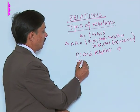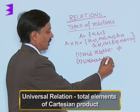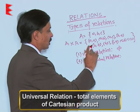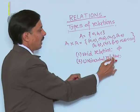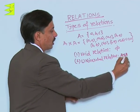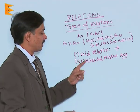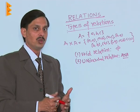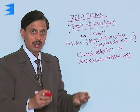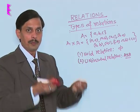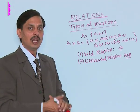Another is the universal relation. What is the universal relation? If all elements of A cross A are taken, then that type of subset is known as the universal relation. So if A is any set and we take the entire set of elements of A cross A, that is known as the universal relation.